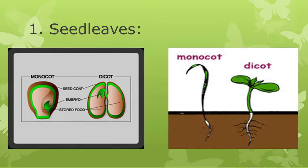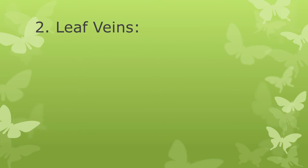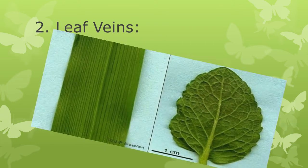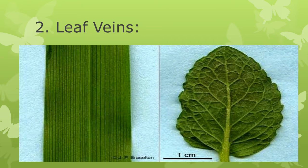Second: Leaf Veins — these are the lines on the leaf. If the leaf veins are parallel, it is a Monocotyledon leaf. And if the veins are branched, then it is a Dicotyledon leaf.